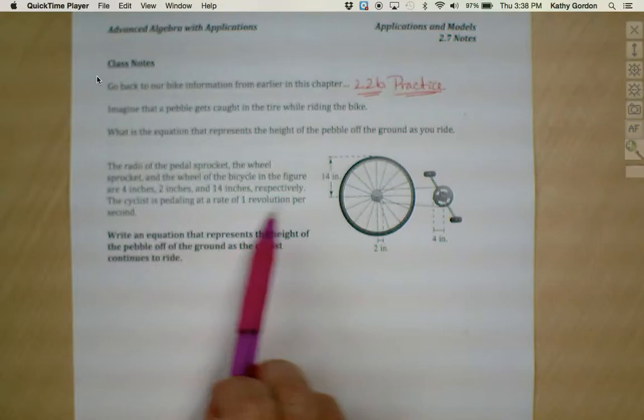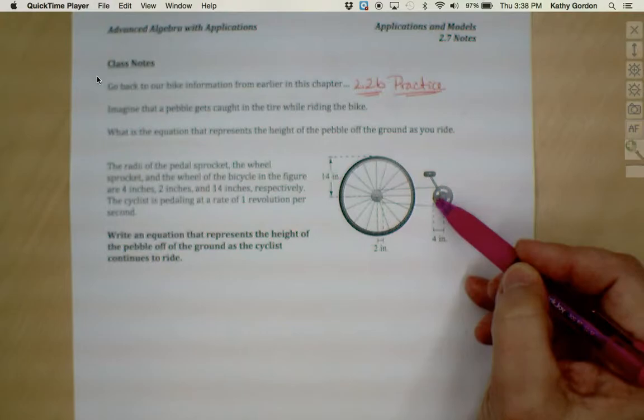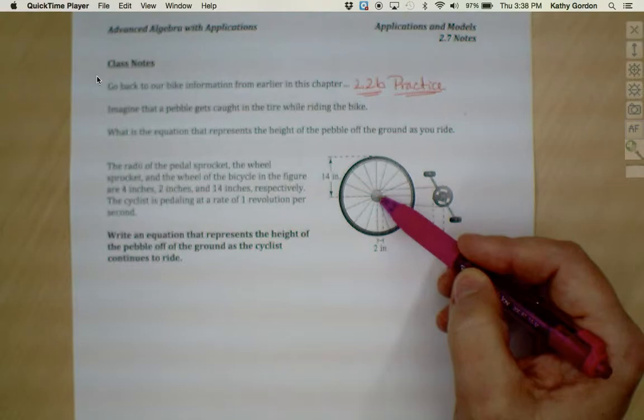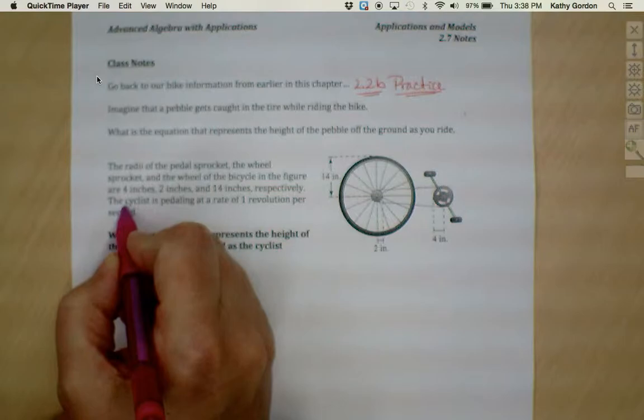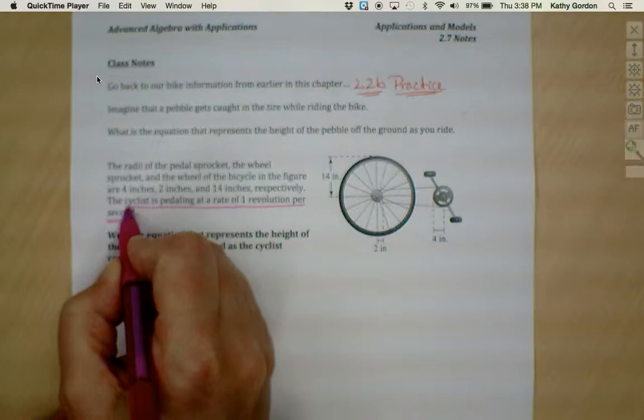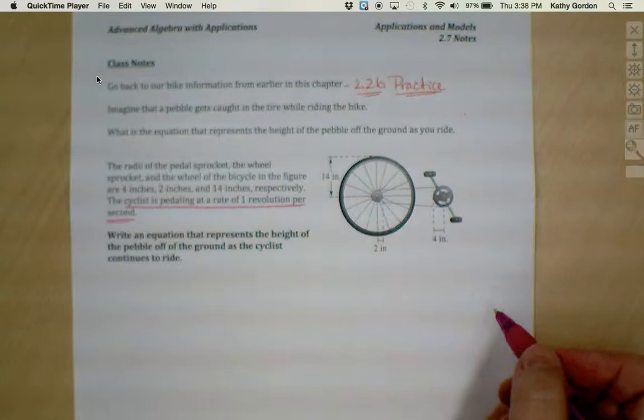We have some information here, which we can also see in the diagram. The radius of the pedal wheel was 4 inches, the radius of this inside wheel was 2 inches, and the radius of this entire wheel is 14 inches. We're also being told that the cyclist is pedaling at a rate of 1 revolution per second.